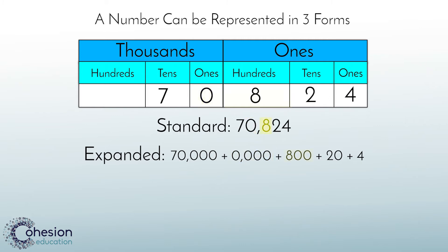The 8 represents 800, the 2 is 20, and then a 4 is represented in the ones place.